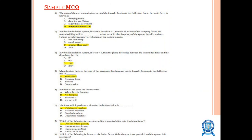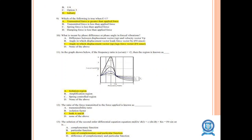Some sample MCQs for forced vibration: The ratio of maximum displacement of the forced vibration to the deflection due to static force is called — option A: damping factor, B: damping coefficient, C: logarithmic decrement, D: magnification factor. The answer is magnification factor. There are 15 such questions in total. Thank you.